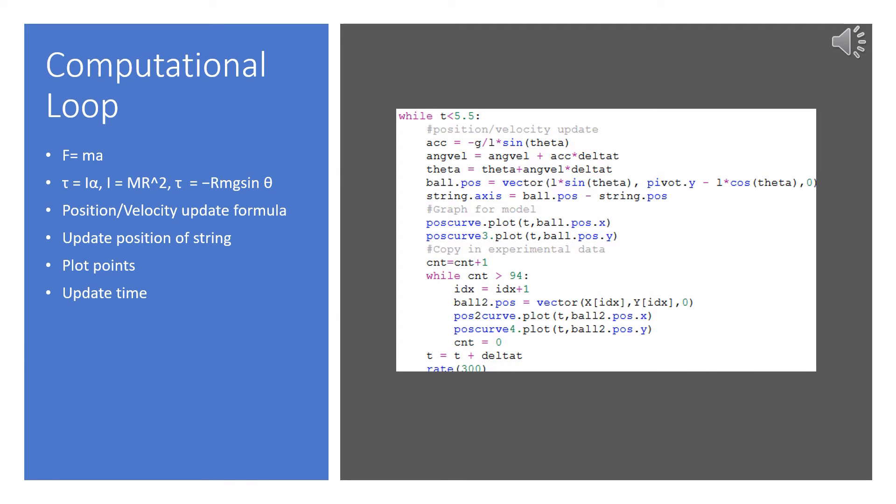Here is the computational loop that does the heavy lifting for the lab. In this case, we use the pendulum as the system and Earth as the surroundings. The first step is finding the angular acceleration. To do this, we can use the rotational form of Newton's second law, which says torque is equal to the rotational inertia times the angular acceleration.